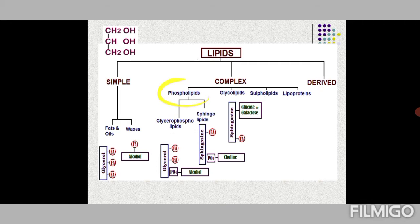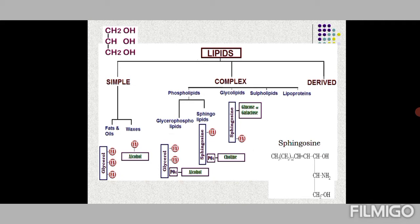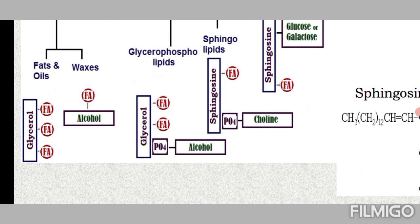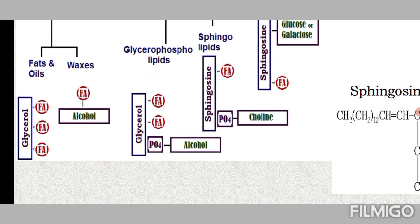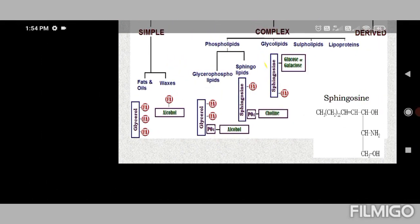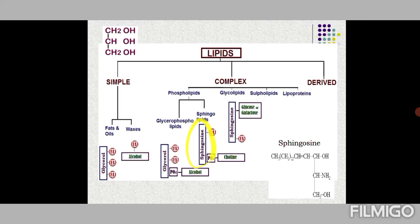Phospholipids can be either glycerophospholipids — having a glycerol backbone — or sphingophospholipids — having sphingosine as the alcohol. In glycerophospholipids, two of the three glycerol carbons have fatty acids attached and the third carbon has a phosphate group linked to an alcohol such as choline or serine. Sphingophospholipids have sphingosine with a single fatty acid and a phosphate group connected to choline.